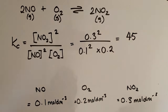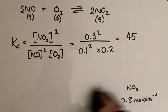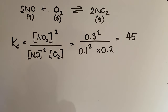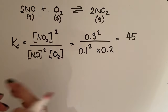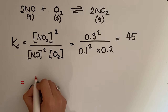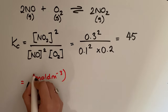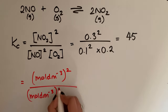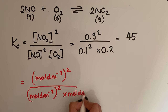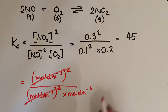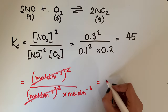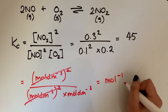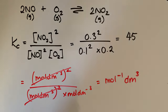We also need to work out the units for Kc. Looking at the expression: mol dm⁻³ squared at the top, divided by mol dm⁻³ squared times mol dm⁻³ at the bottom. The mol dm⁻³ squared terms cancel out, leaving one over mol dm⁻³, which brings to the top as mol⁻¹ dm³. So our final answer is Kc = 45 mol⁻¹ dm³.